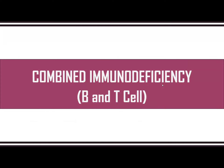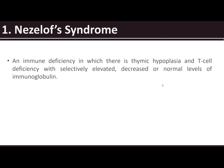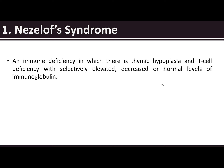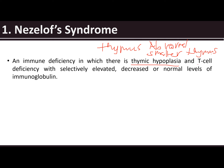Now let's go to combined immunodeficiency — both B and T cells affected. Under here, we have Neselof syndrome, an immunodeficiency in which there is thymic hypoplasia and T cell deficiency, with severely elevated, decreased, or normal levels of immunoglobulin. You have a problem with your thymus — when you say hypoplasia, the thymus tends to have an abnormally smaller size.